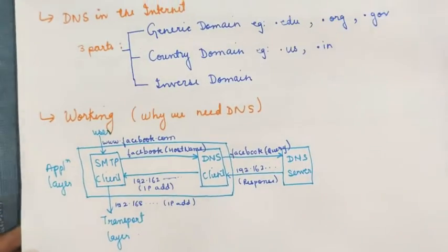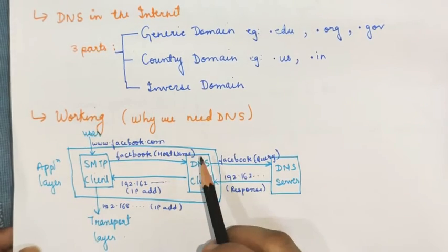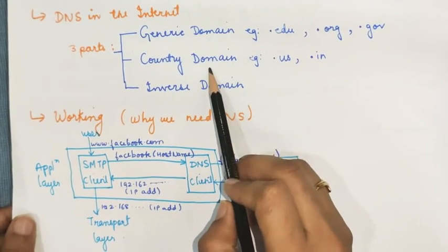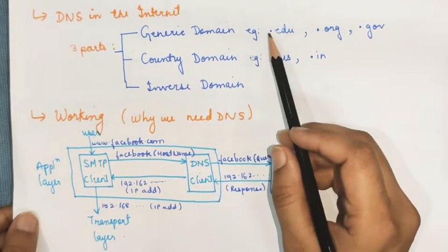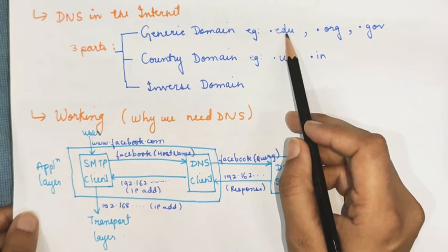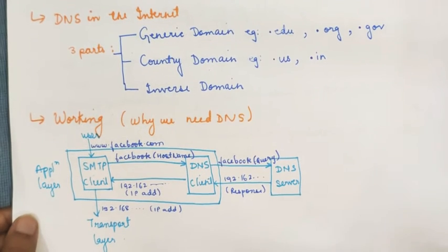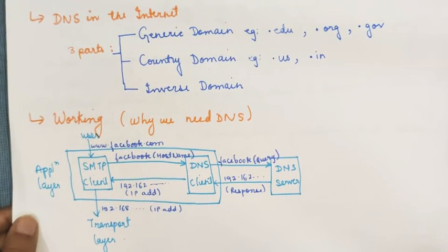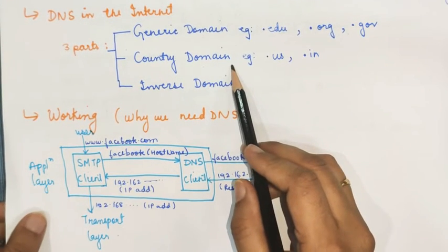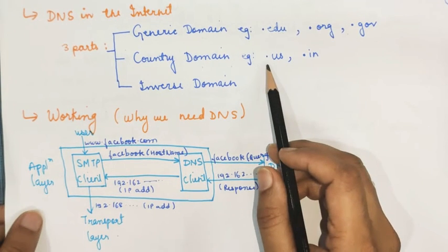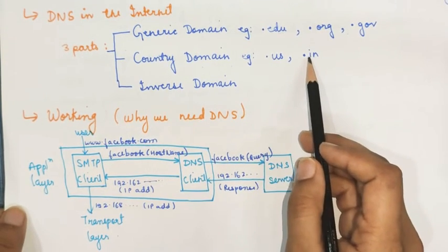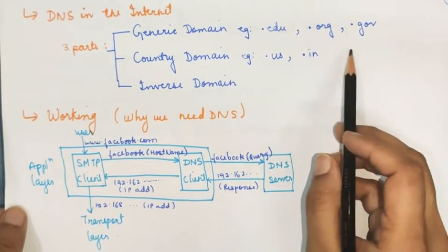Next, in the internet, the domain name space tree has been divided into three different categories: generic domain, country domain, and inverse domain. In generic domain, hosts are defined according to their generic behavior — for example, .edu is for educational institutes, .org is for organizations, and .gov is for governments. In country domain, domains are defined according to the country's name using two-character abbreviations — for example, .us for the US and .in for India.